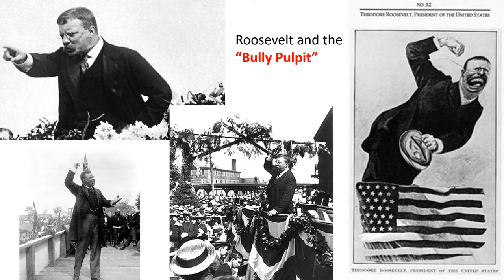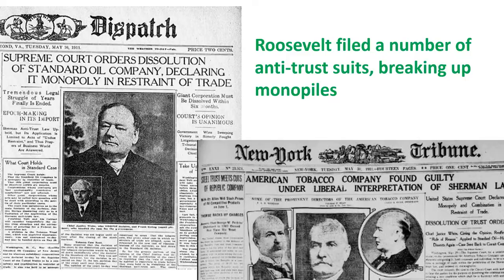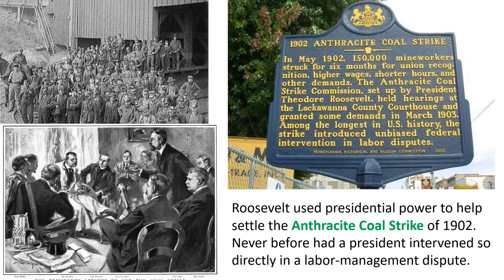Roosevelt was famous not only for having a reformist administration but also for being very powerful and using the power of the presidency. He was a tremendous public speaker — an impressive, gregarious, outgoing guy. He called his reform program the Square Deal: he was going to offer the average guy a square deal, which meant the government was going to get involved. Laissez-faire was over. Roosevelt filed a number of antitrust suits, breaking up monopolies. When coal workers went on strike in 1902, Roosevelt used his presidential power to mediate that dispute — no president had gotten the federal government involved in a labor-management dispute before.